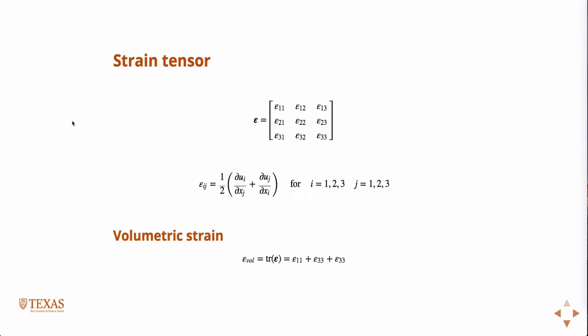Just a few more definitions. We call the volumetric strain the trace of the strain tensor. So the trace of a matrix is the sum of the diagonal. In this case, we can think of the strain tensor as a 3 by 3 matrix, and so the trace of this guy is those components.